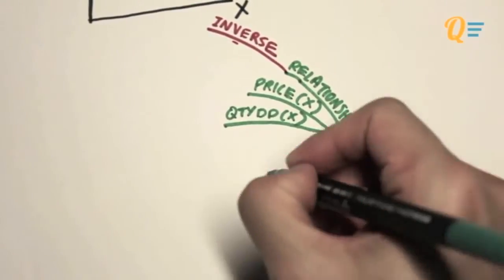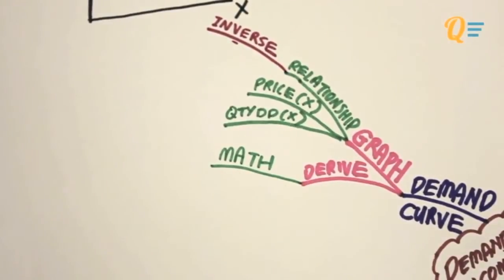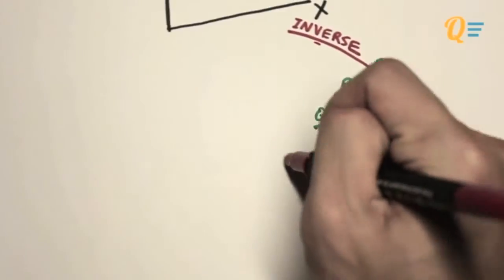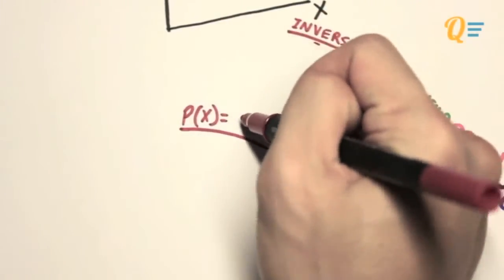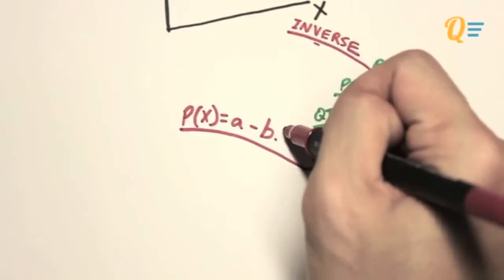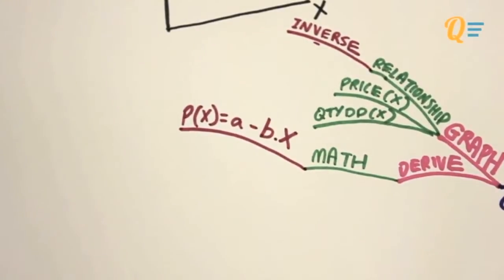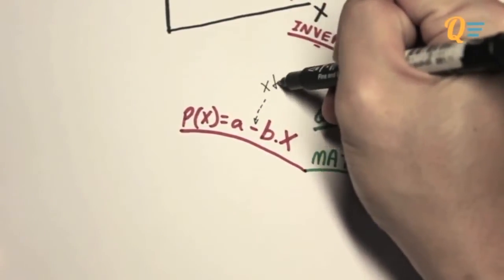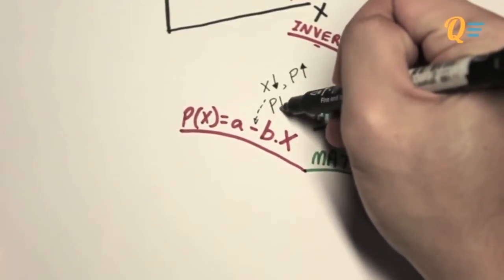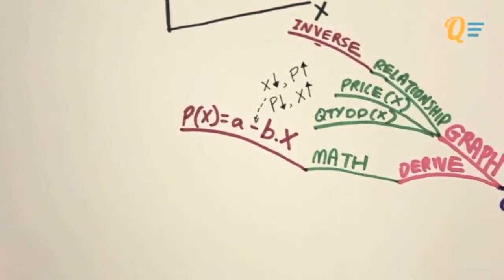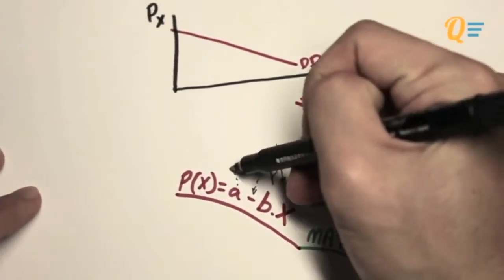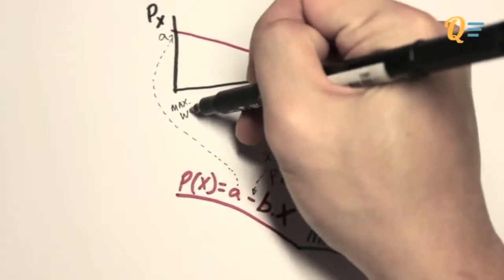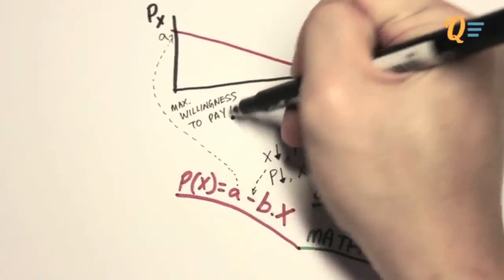The first method will be the mathematical method. And this is simply the demand curve expressed in the form of an algebraic equation, which is simply: the price of X, which is a function of the quantity demanded, is equal to A minus B times X. The reason why the parameter in front of variable X is negative is because we want to show the inverse relationship between the price of X and the quantity demanded of X. And the parameter A is simply the maximum amount that these consumers are willing to pay for a unit of good X.